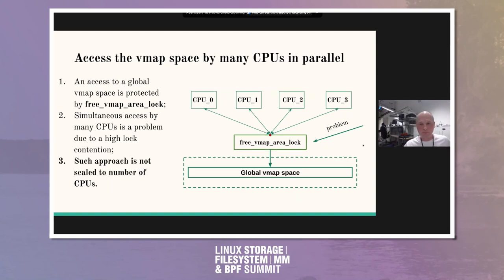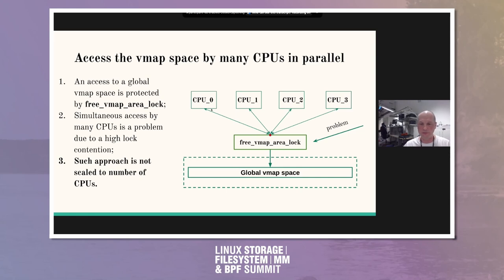Moving to the next global data structure. On the right side is a high-level picture — I don't want to go into deep detail to avoid losing focus. At the bottom we have the global free VMAP space. There is another spin lock protecting this second global data: the free_vmap_area lock. We have multiple users, and you can see that access is not serialized at all — everything goes through one single lock. Each CPU dealing with global VMAP space has to wait on each other. Such an approach is not scalable to the number of CPUs at all.